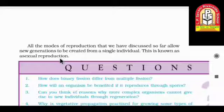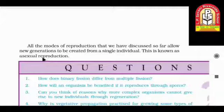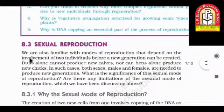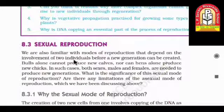Whatever type of reproduction we have discussed up to this topic involves single individuals only — there is no combination of two individuals. That is why they are known as asexual reproduction. The way of reproduction where two kinds of organisms are involved to give offspring is known as sexual reproduction. We are also familiar with modes of reproduction that depend on the involvement of two individuals before a new generation can be created.